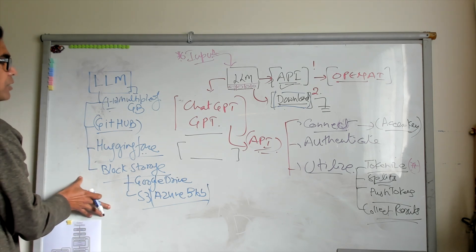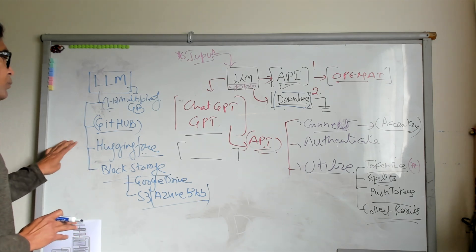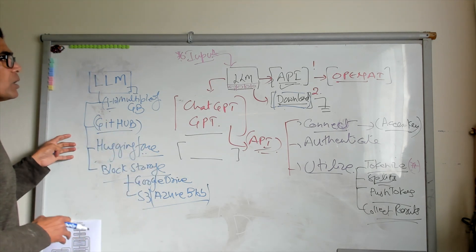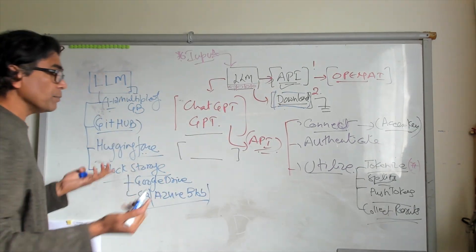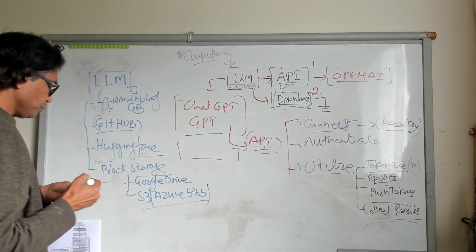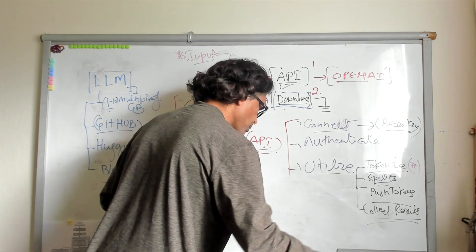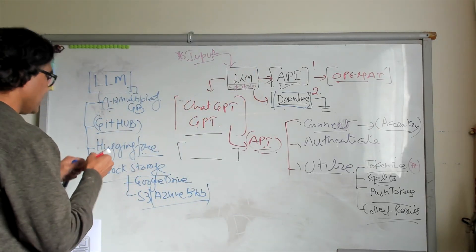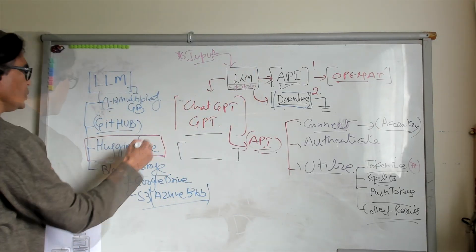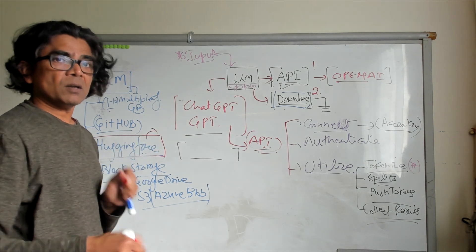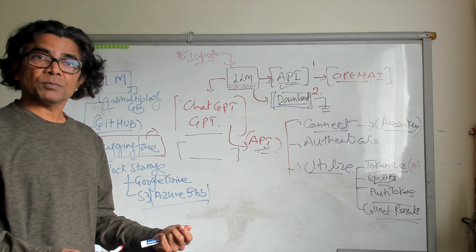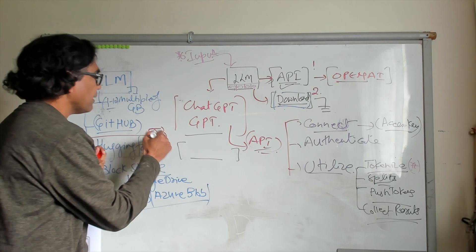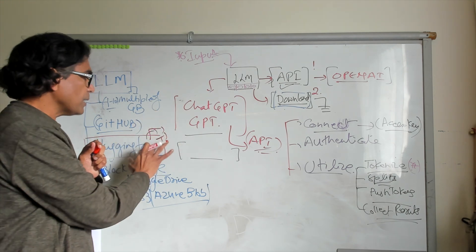These are the various methods available. However, if we look at how organizations really take care of large language model deployment and make it available to the public, the most popular method as of now is to use Hugging Face. In Hugging Face, you can upload the model and make it public, and then when the model is publicly available, you can actually build an application around it directly at Hugging Face using the compute provided by Hugging Face.